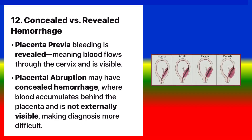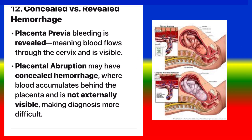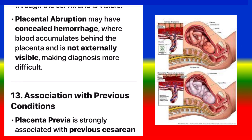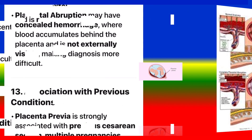Concealed versus revealed hemorrhage. Placenta previa bleeding is revealed, meaning blood flows through the cervix and is visible. Placental abruption may have concealed hemorrhage, where blood accumulates behind the placenta and is not externally visible, making diagnosis more difficult.